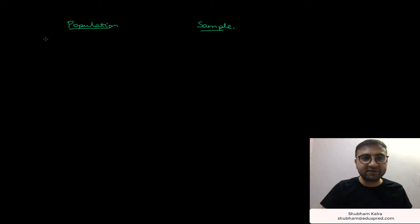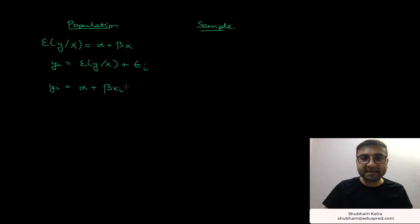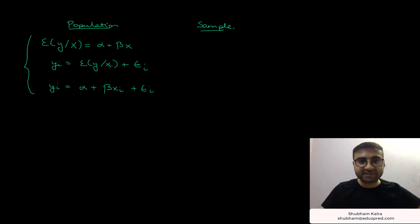The equations on the population side are: first, expected value of y given x is equal to alpha plus beta x. The second equation is yi is equal to the expected value of y given x plus epsilon i. And the third equation is yi is equal to alpha plus beta xi plus epsilon i. These are the three equations on the population side.